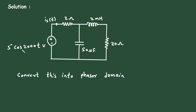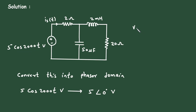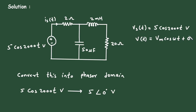The source is 5cos(2000t) volts. This will become 5∠0° volts in phasor form. Comparing with the standard equation V(t) = Vm·cos(ωt + φ), the value of omega is ω = 2000 radians per second.